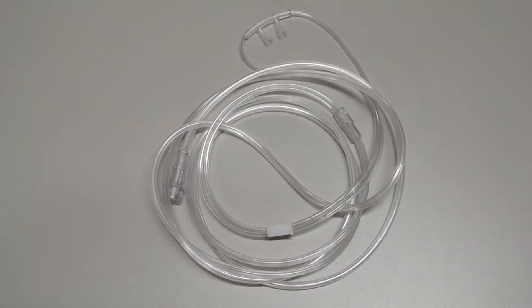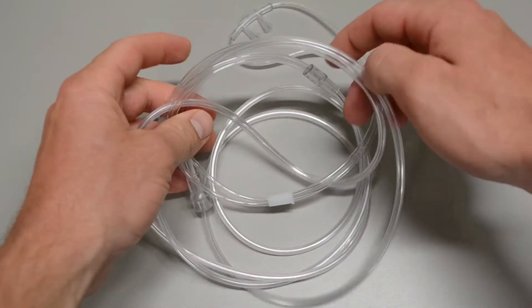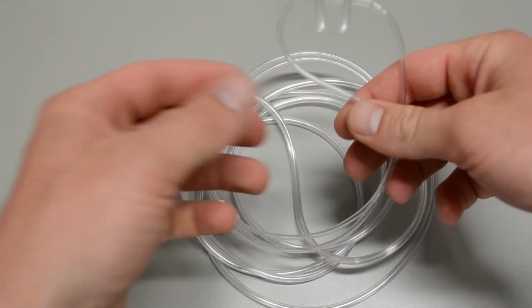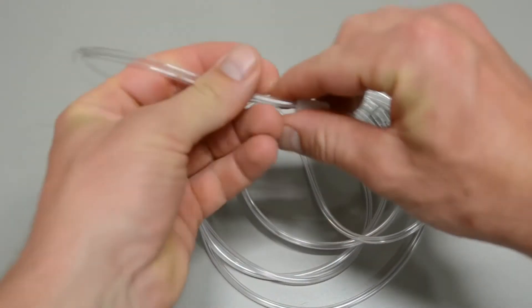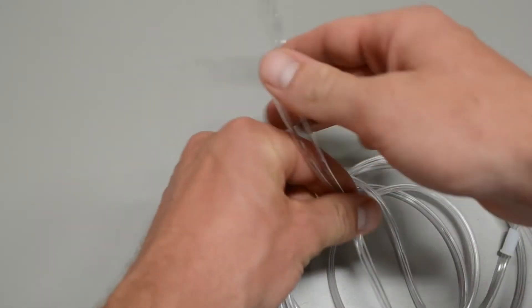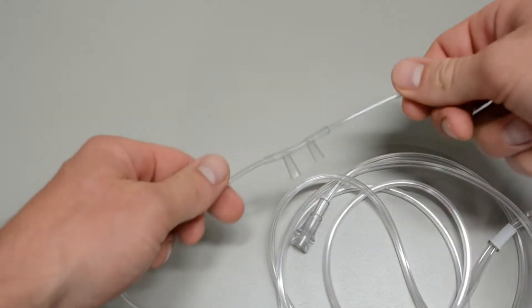Here we have a nasal cannula, sometimes you'll see it abbreviated NC. The only real components you need to be familiar with when you open it out of the package—these are obviously single-use—are this little slide. This allows you to cinch it underneath their chin. We'll talk about that in a moment when we demonstrate it.